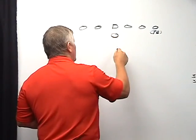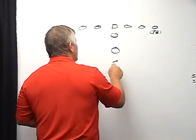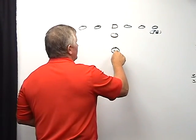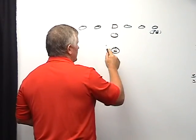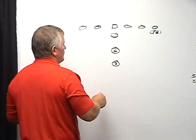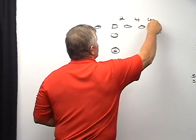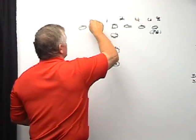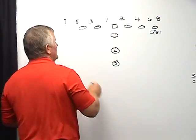We've got our quarterback, our fullback, and our tailback. Our fullback is number 4 and our tailback is number 3. The hole numbers are 2, 4, 6, 8 on one side and 1, 3, 5, 7 on the other.